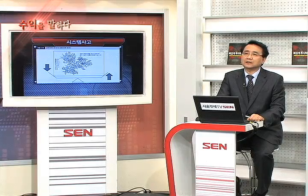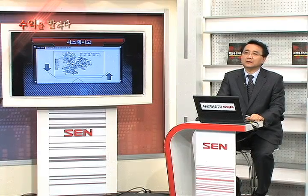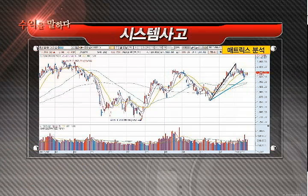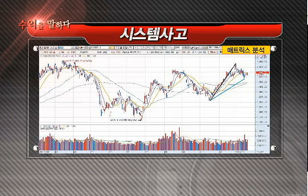지금 이 그래프를 한 번 봐주시기 바랍니다. 각각 업종으로 네트워크가 마치 아메바 구조같이 형성됐는데 내부에서 불을 띄워서 변동할 수도 있고 외부에서 흔들어서 변동할 수도 있습니다. 이번에 저점이 11월 16일 날 1856부터 움직여 왔거든요. 그래서 1월 3일까지 1단계 상승한 다음에 2042까지 오른 다음에 조정을 하고 있습니다.